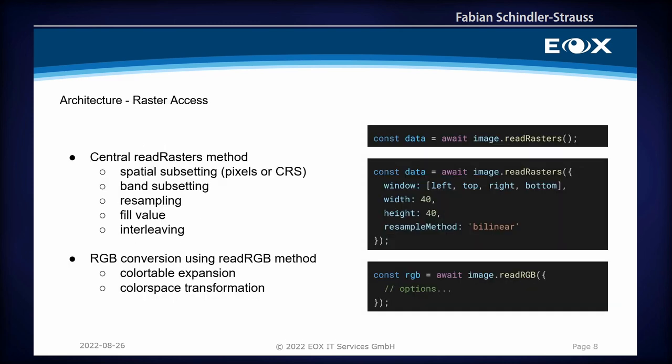Now for actual raster access — how do you get the raster data for your images? There are two ways: one is dealing with the raw data, and since TIFFs are often used to store RGB data, there's also a method called readRGB. You can call the simple function with no options and get all the data in one go, or you can provide many options. With the window parameter you can specify the image window to read. You can also specify width and height, in which case it will resample. You can specify one or two bands, and whether you want data interleaved or in separate arrays.